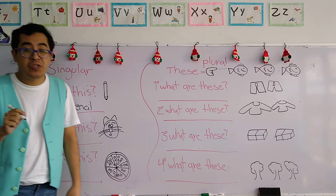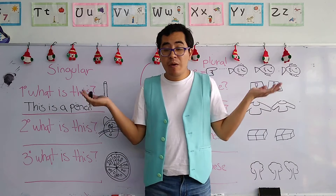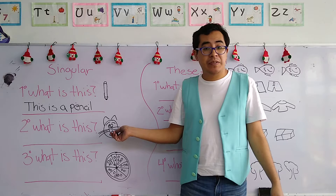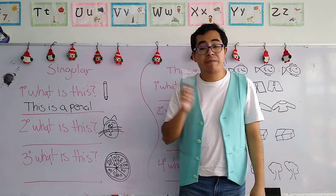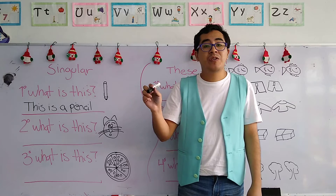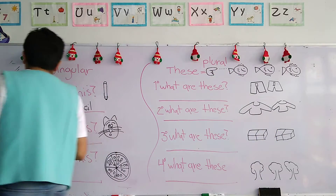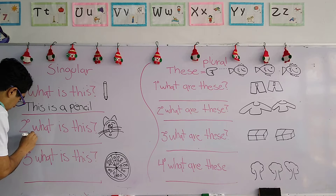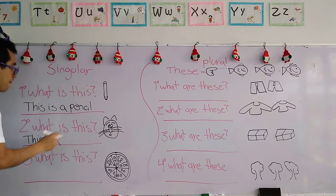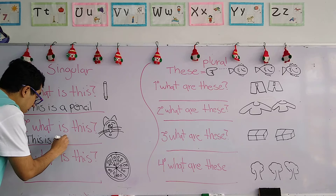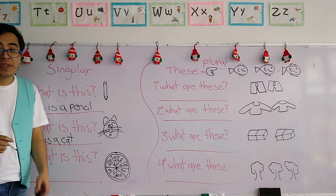This is a pencil. Esto es un lápiz. Let's continue with the second question. For number two, it says 'What is this?' Remember, when we answer it, we have to write all of the answers. This is a cat. Esto es un gato.